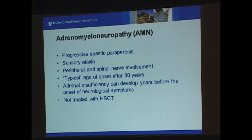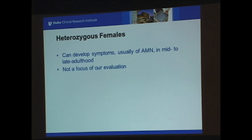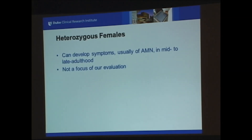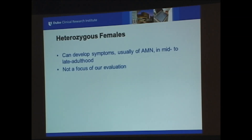We did not focus a lot on heterozygous females because they typically develop symptoms of AMN much later in adulthood. Because of that, it wasn't a focus of our review since we were focused on what happens more proximal to newborn screening. And regardless, there are just big gaps in data about this anyway.